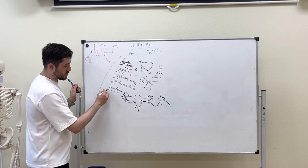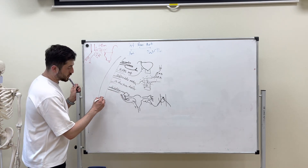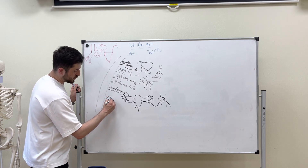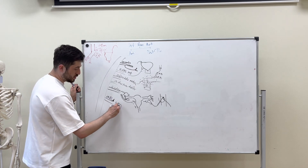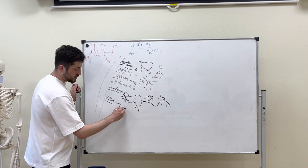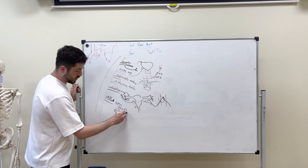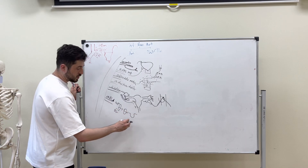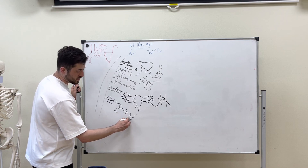The next branch is arteria pudenda interna. It passes through the foramen infrapiriform, then through the foramen ischiaticum minus, and then it reaches the fossa ischiorectalis.